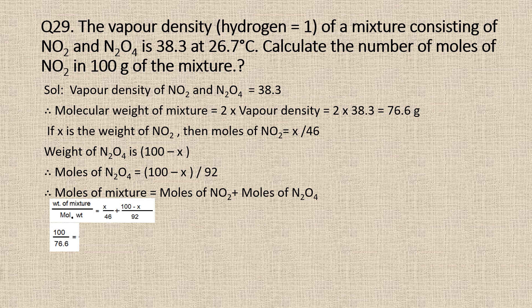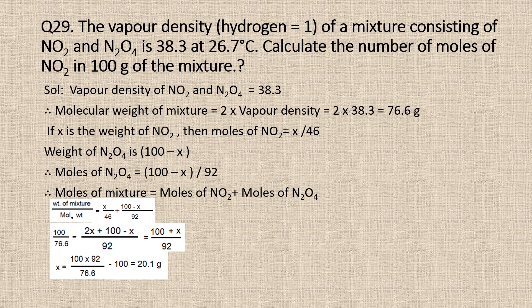Weight of mixture is equal to 100 grams and molecular weight is 76.6 grams. Putting in the values and solving for x, we get x equals 20.1 grams. So x is the weight of NO₂, which is equal to 20.1 grams. Therefore, moles of NO₂ will be equal to weight of NO₂ divided by molecular weight, which is equal to 20.1 divided by 46, giving 0.437 moles.